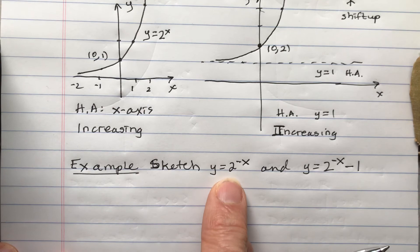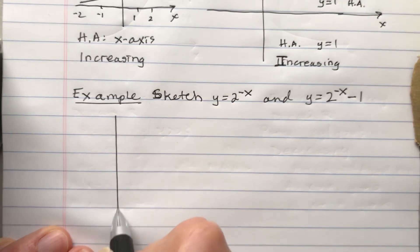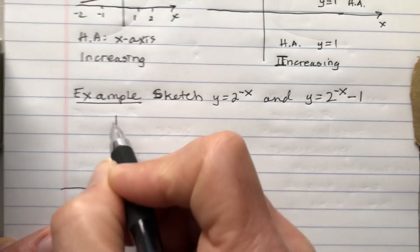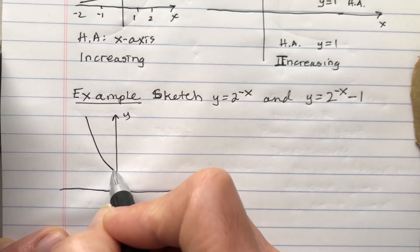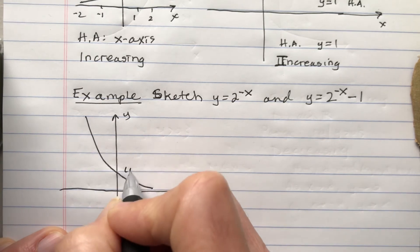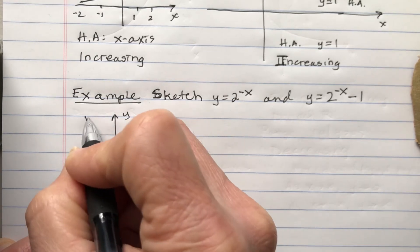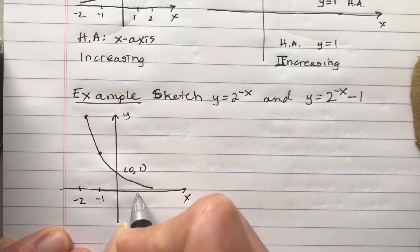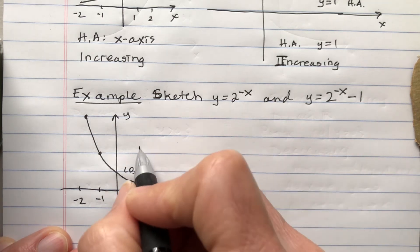Here we have base 2 but with negative x. So what is that negative x going to do? That's going to give us something that's exponential decaying. What you can do is plot points, but it's also quite a bit of memorization.